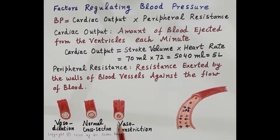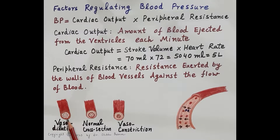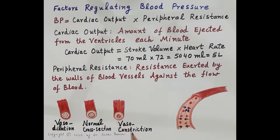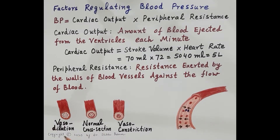Here three blood vessels are shown: a normal blood vessel, one with a widened lumen called vasodilation, and one with a narrowed lumen called vasoconstriction. Because of vasodilation, the widening of the lumen, peripheral resistance falls. Vasoconstriction — narrowing of the lumen — increases peripheral resistance. So blood pressure depends upon cardiac output and peripheral resistance, and peripheral resistance depends upon the dilation or constriction of the blood vessels. Vasodilation reduces peripheral resistance; vasoconstriction increases it.